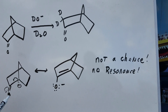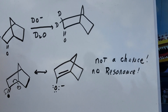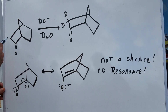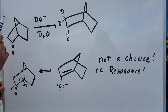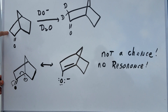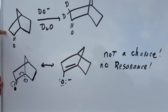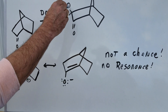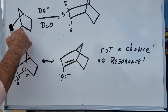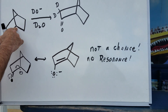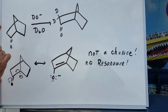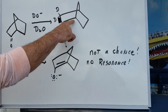Now essentially what's going to happen is any alpha proton you will see will simply exchange for a deuterium. As you can see, these two are obvious alpha protons and I replaced both of these. But the question is, how about the alpha proton that's at the bridgehead carbon?